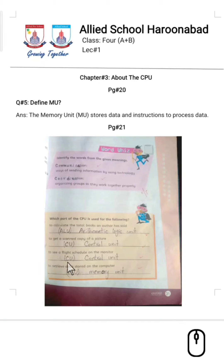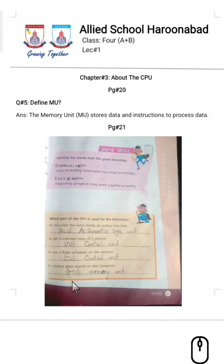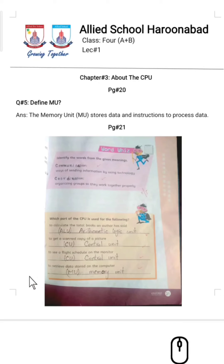The next task is: to see a flight schedule on a monitor. If you want to check a flight schedule on a monitor, you will also use the Control Unit of the CPU, because the Control Unit controls the working — including displaying a flight schedule — as it involves communication between parts.